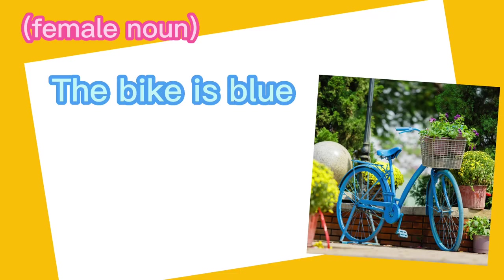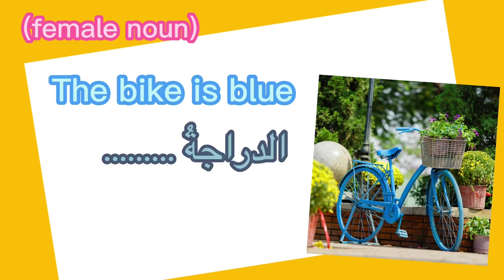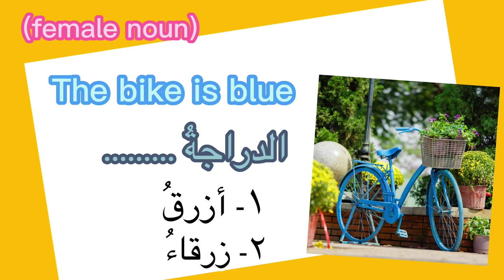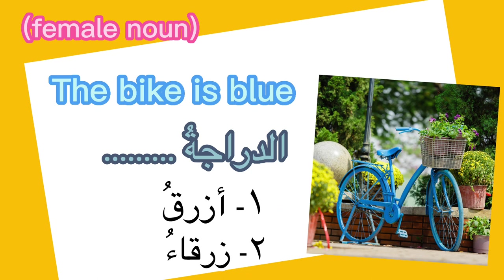This picture is a blue bike. Bike is الدراجة. Is it الزرق or زرقاء? Leave your answer in the comments section. The right answer is زرقاء — الدراجة زرقاء. Well done if you got that right!